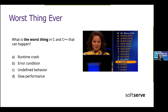What is the worst thing in C and C++ — and probably other programming languages too, yet here it's really likely to occur? Is it a runtime crash, some error condition, undefined behavior, or just a slowdown in performance?